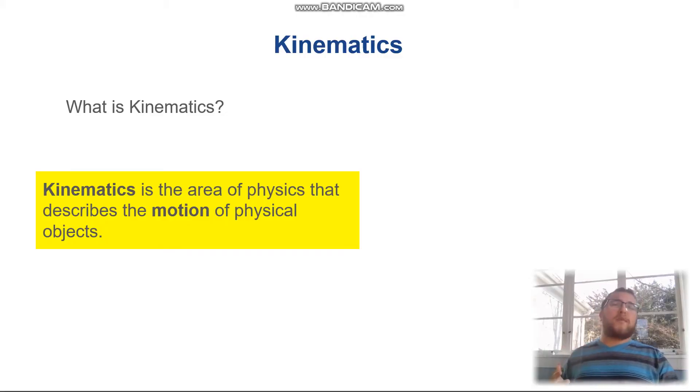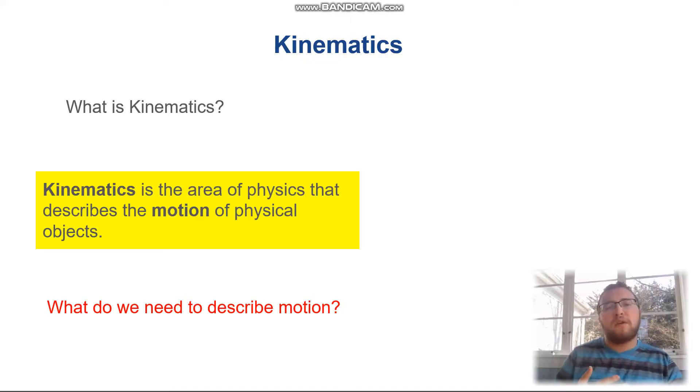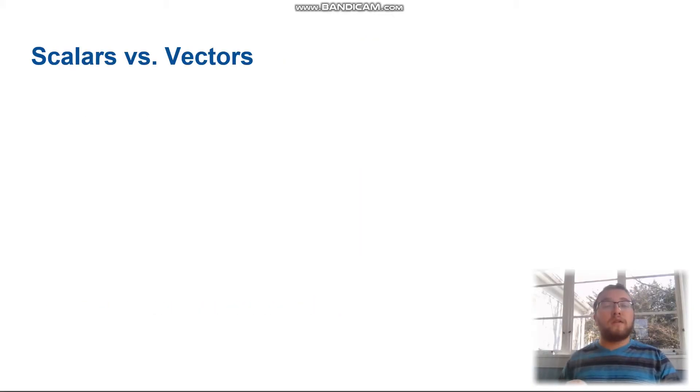The next kind of follow-up question to that is, what do we need to describe motion? What sorts of tools, quantities, and numbers do we use to describe that motion? Well, it turns out that there are two really important ones, and those are scalars and vectors.